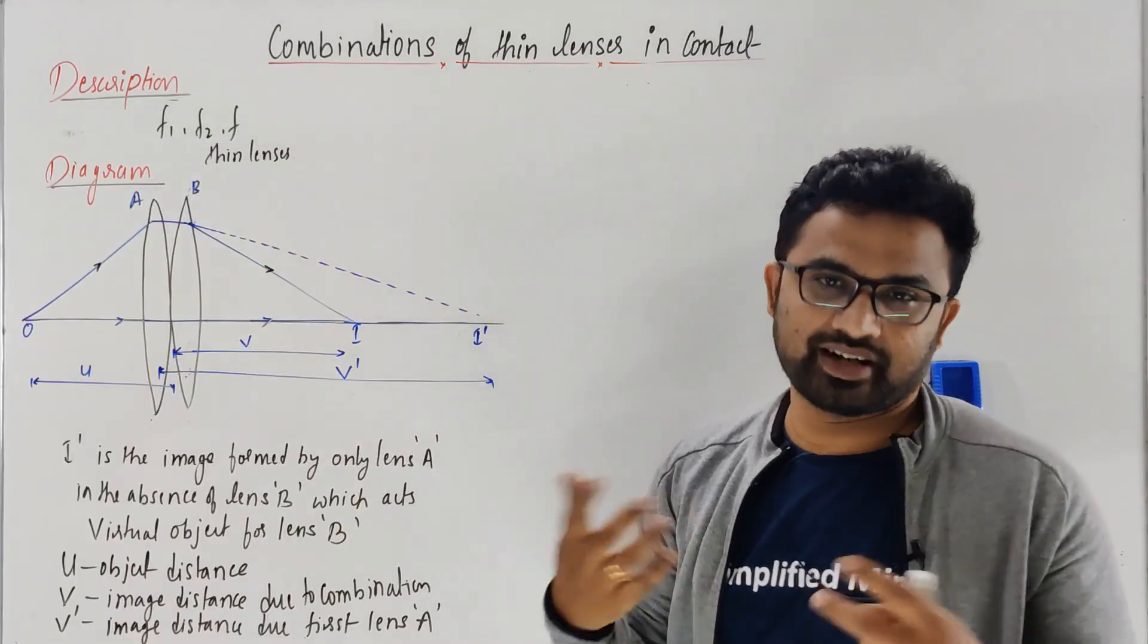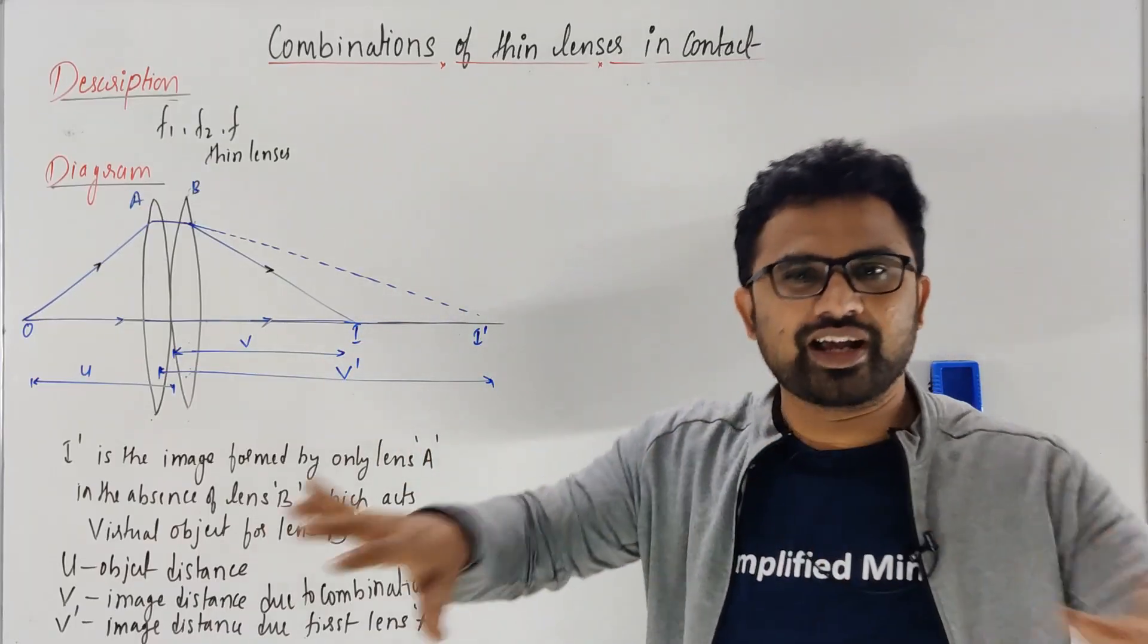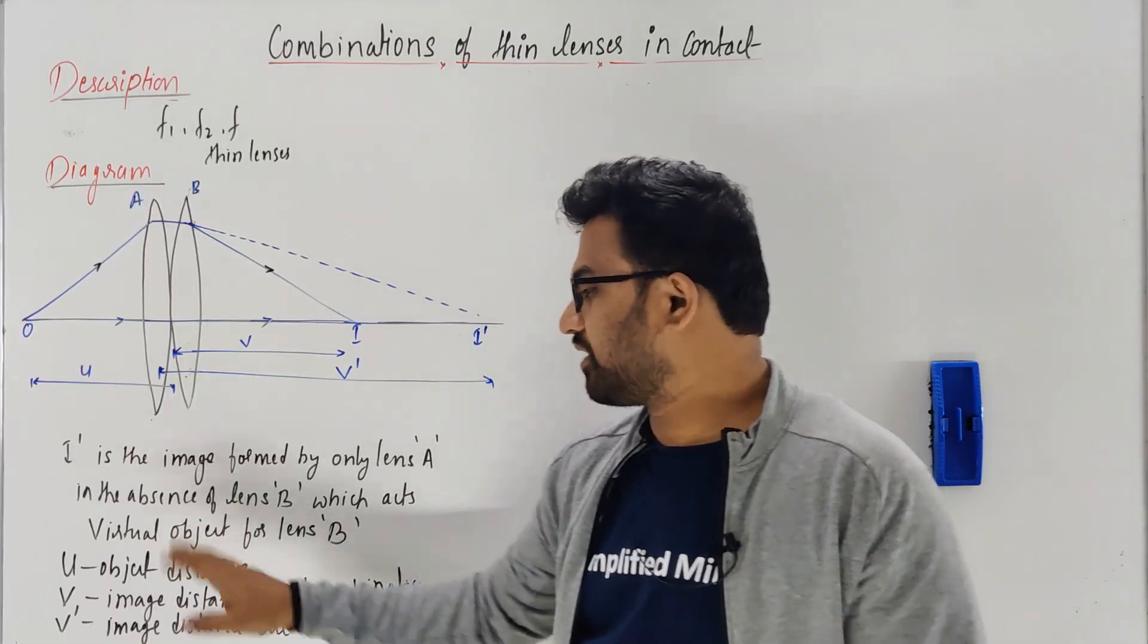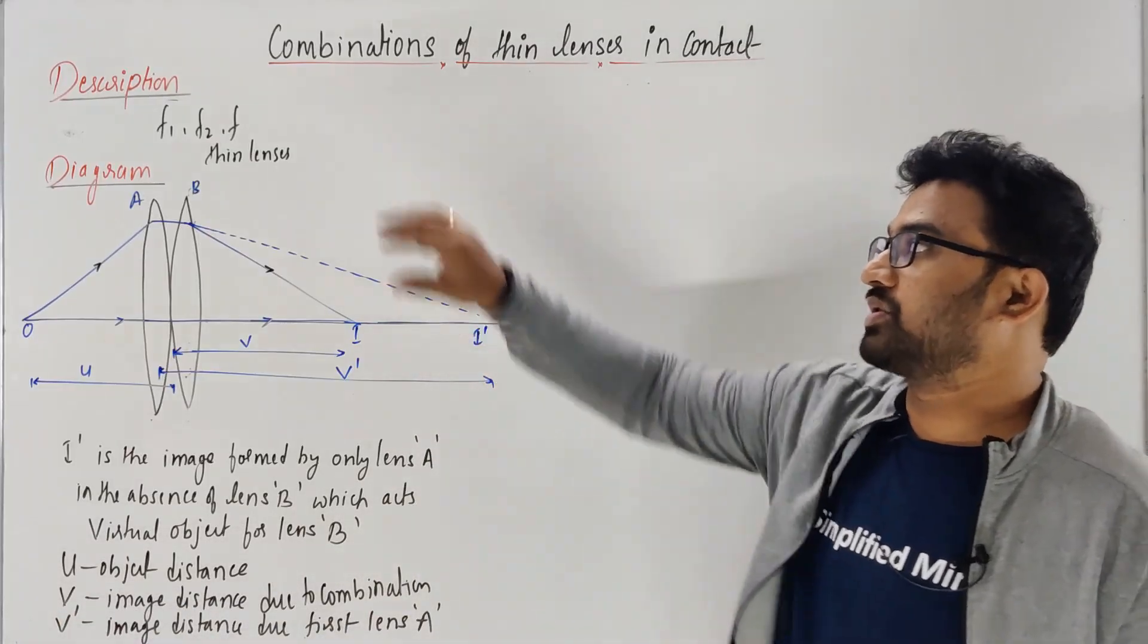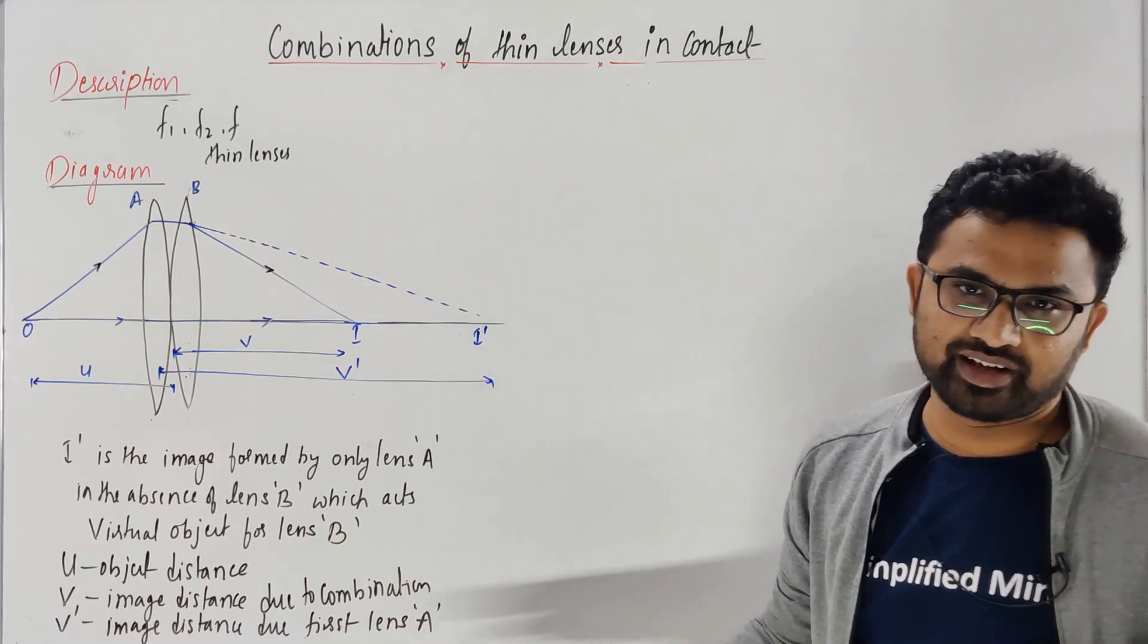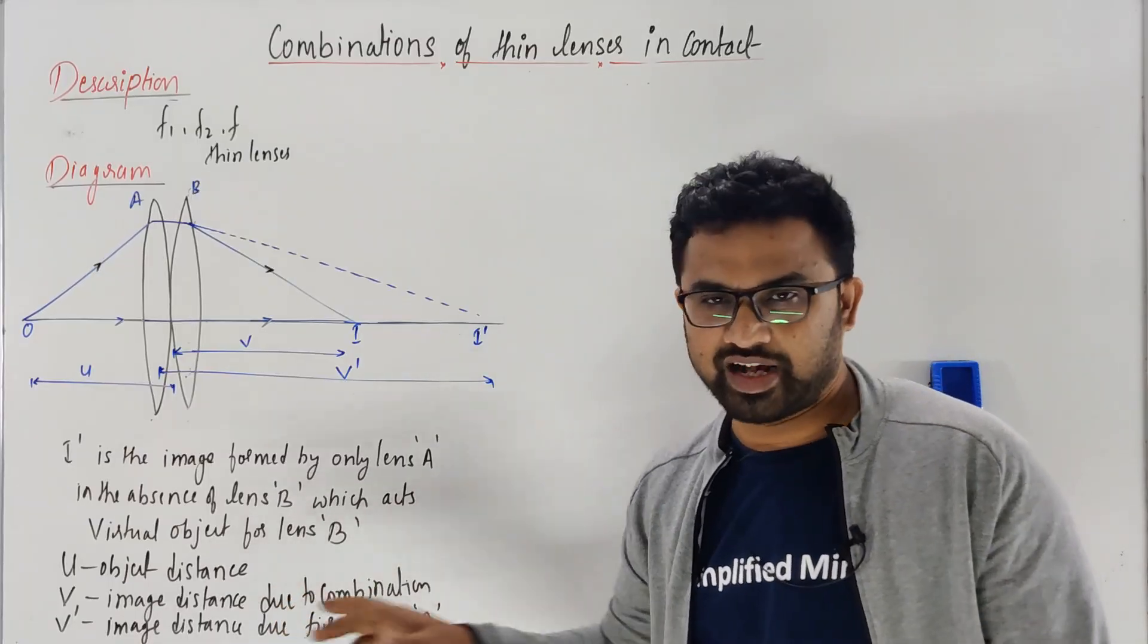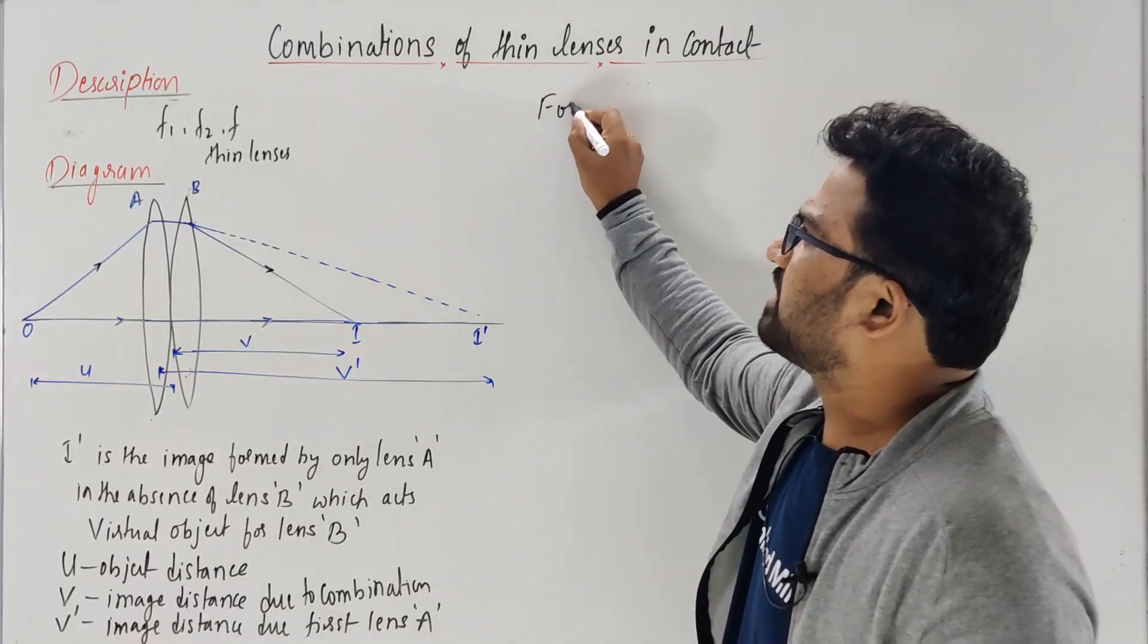I' is the virtual object and the final image is formed. We split it into two cases like in lens makers formula. Also mention what is u, v, and v' in the exam. Write this statement in the description of the diagram. Mention what is u, what is v, and what is v'.